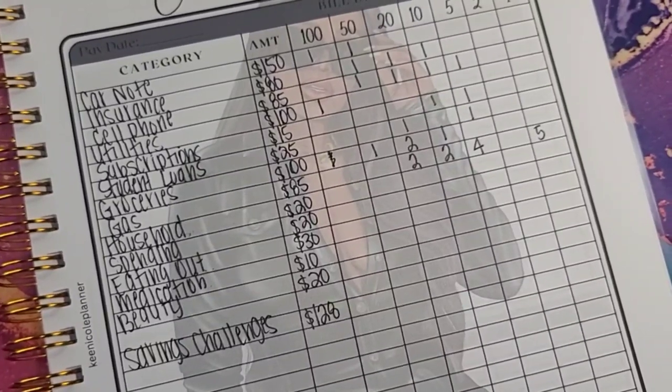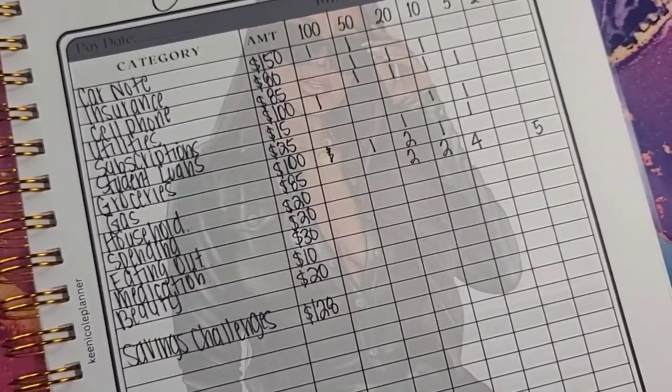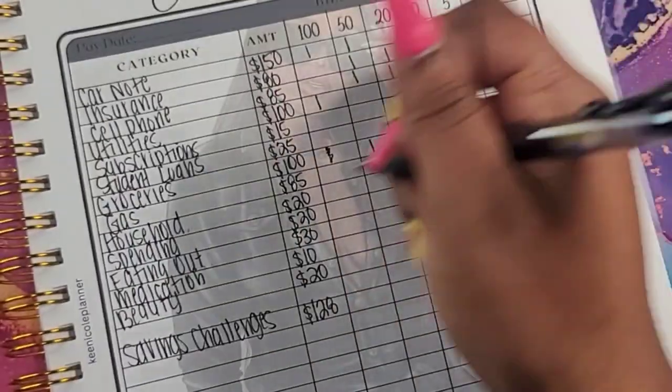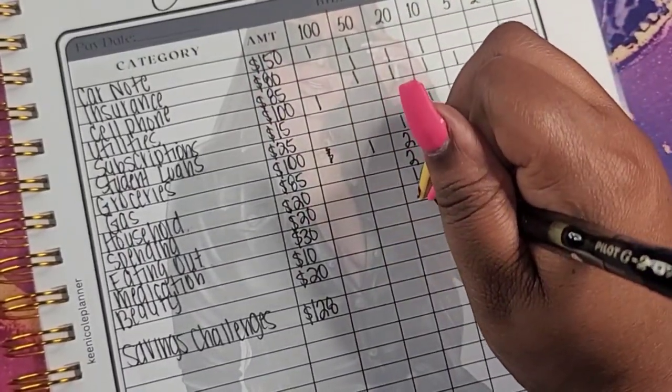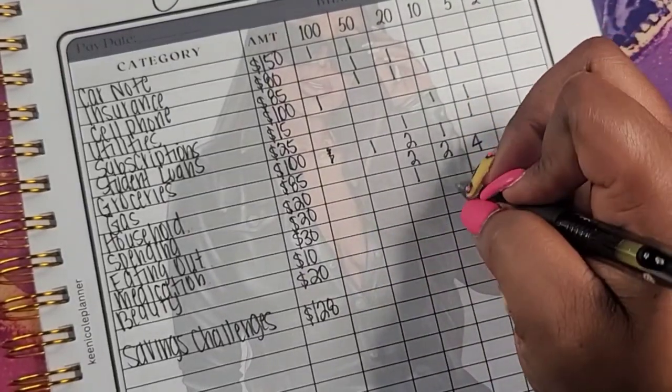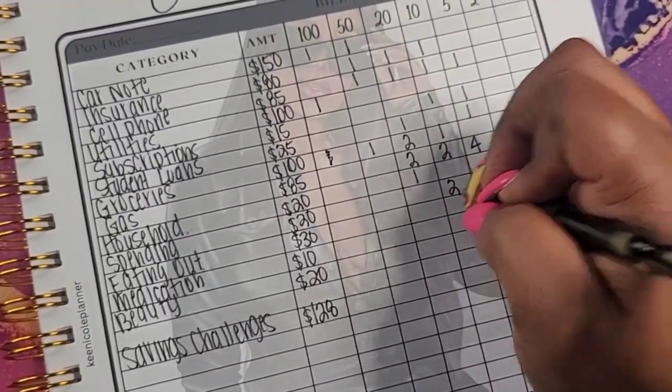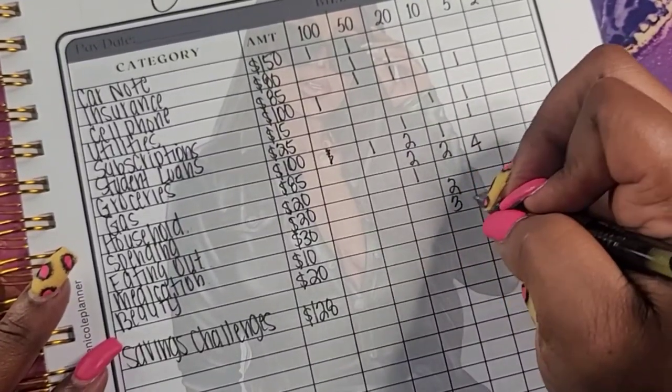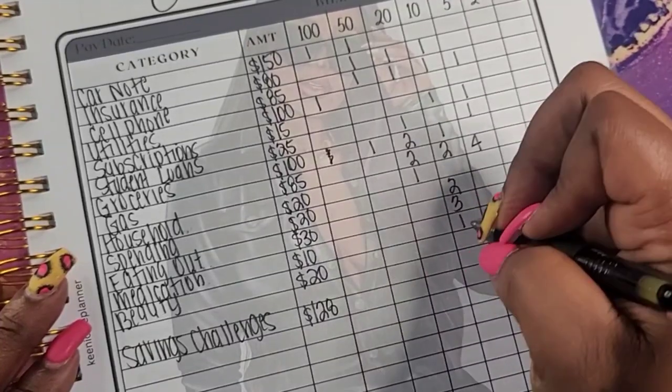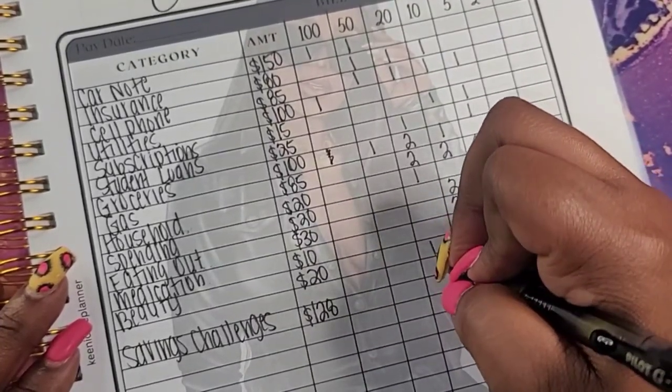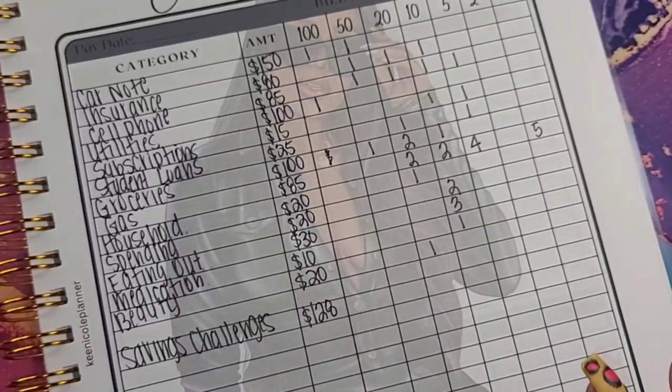Okay, I think that looks a little bit better. So for my household, it's going to get just as normal $20 bill. For spending, I am going to do two $10s. For eating out, let's do three $10s. For medication, we're going to do $110. And for beauty, let's just do $120.